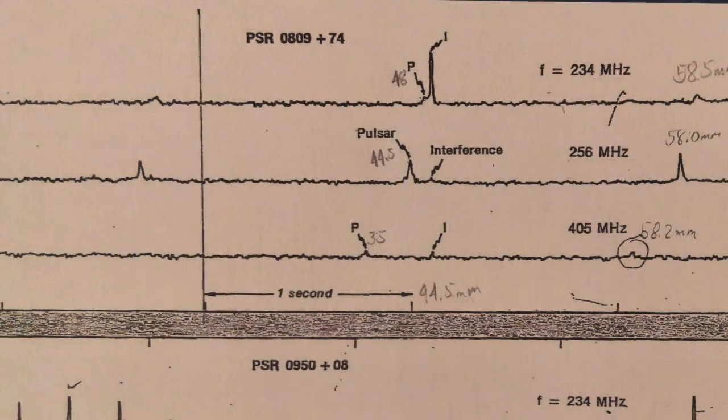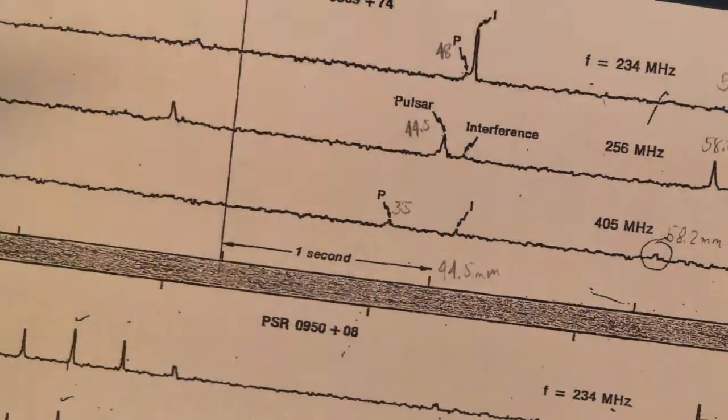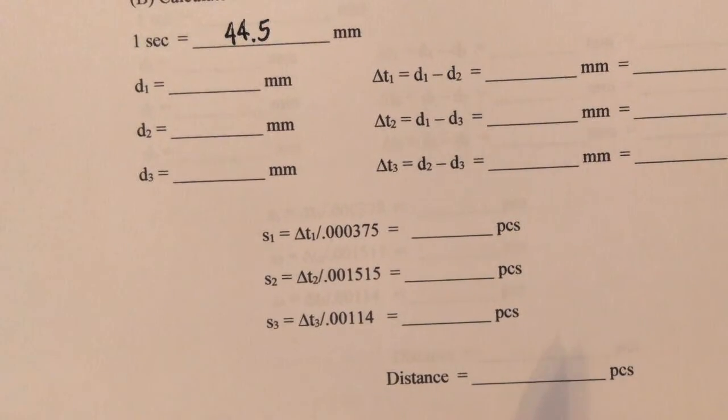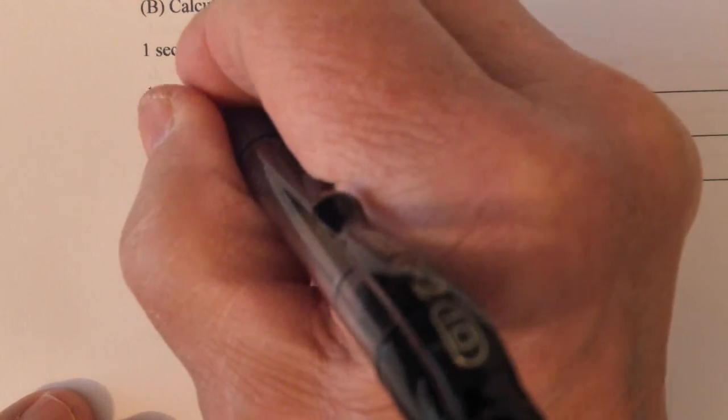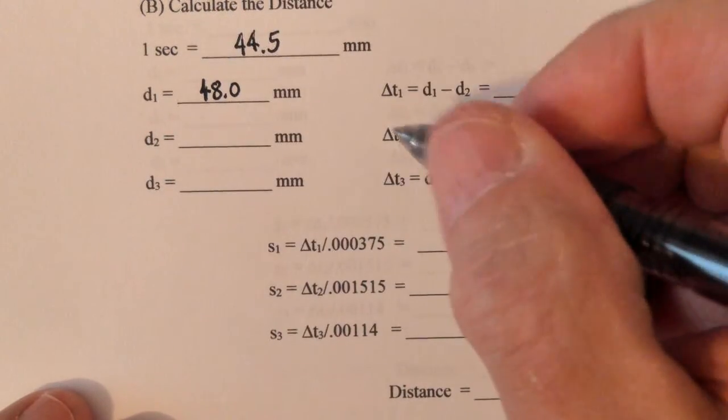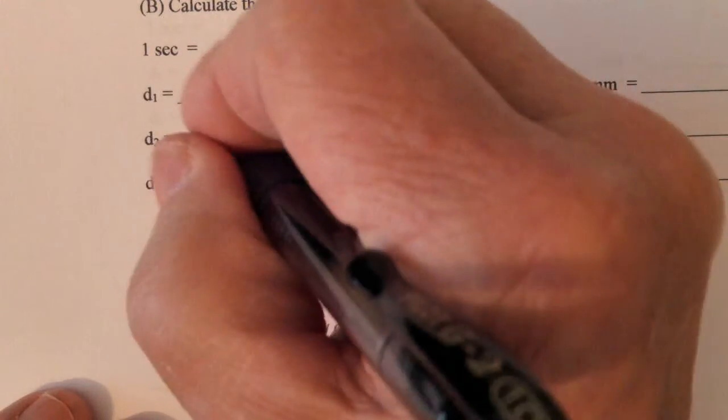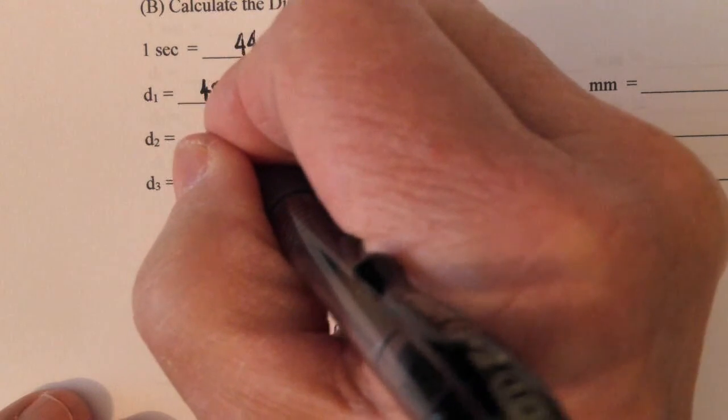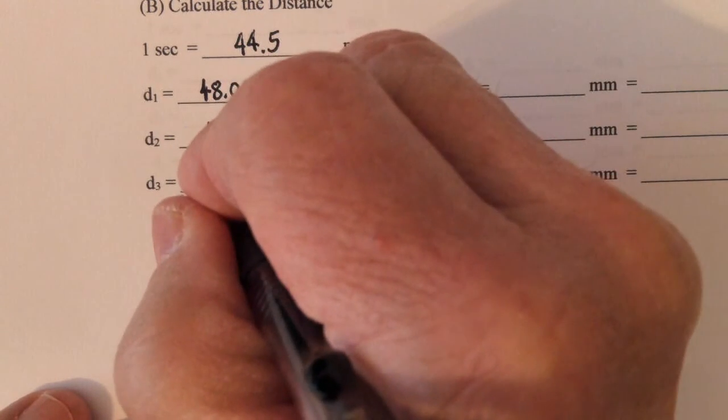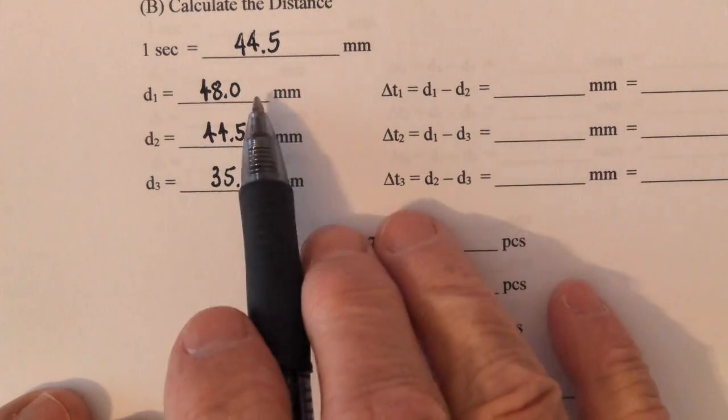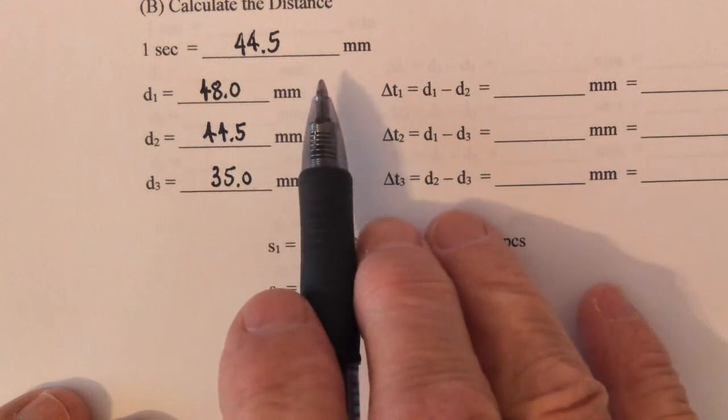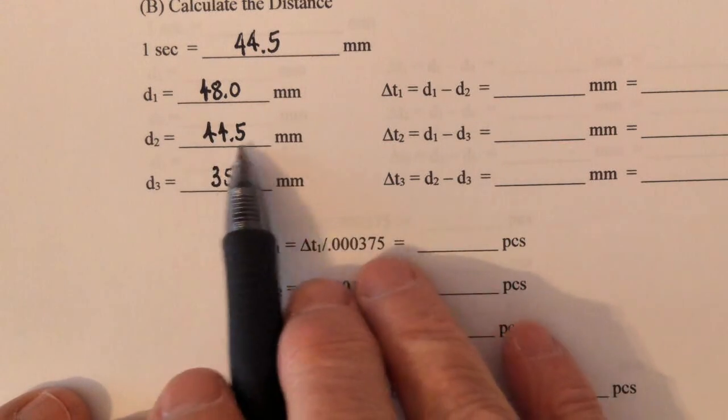On our worksheet, we're going to record those numbers. D1 is 48. On the second line, it was 44.5. On the third line, it was 35. These are the distances measured from the line to the pulse.